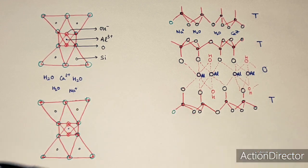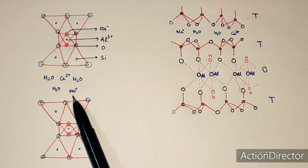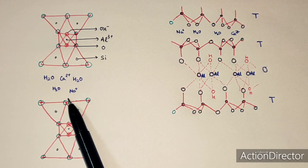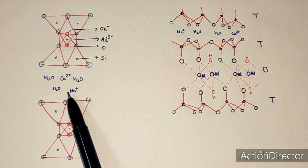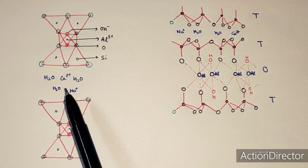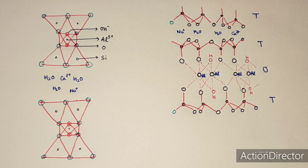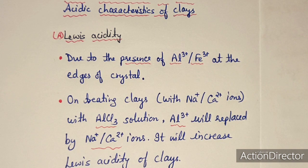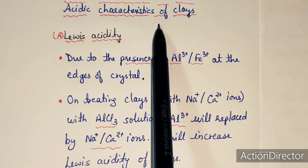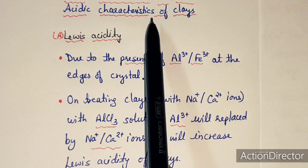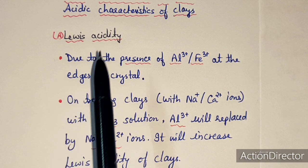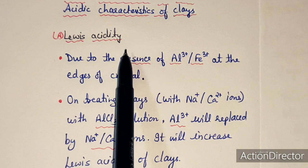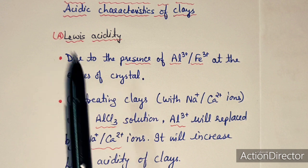The clay becomes hard on drying — this is the temporary porosity of montmorillonite. In the wet condition it is a good catalyst. Montmorillonite clay has acidic character, which is why it is a very good catalyst. It has two kinds of acidic character: Lewis acid character and Brønsted acid character.